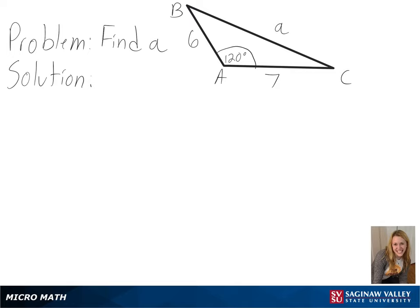Our problem is to find a. Looking at our triangle, we can see the values we know are two side lengths and the included angle. So to find the missing side length, we will be using the law of cosines.